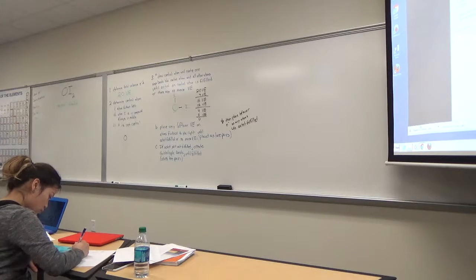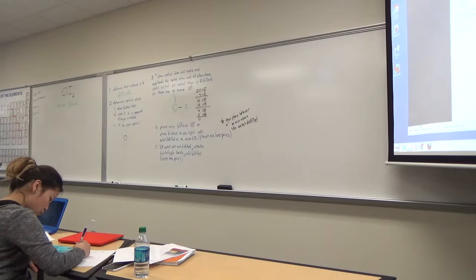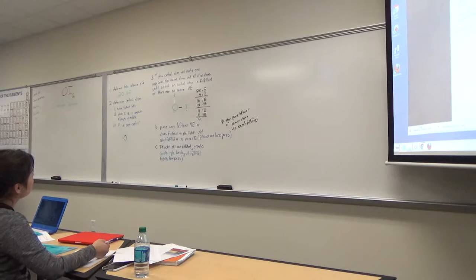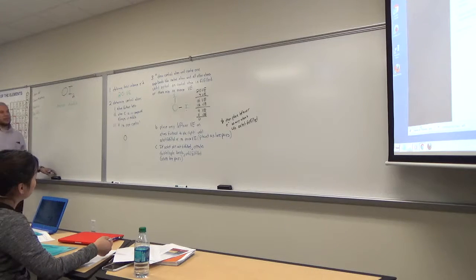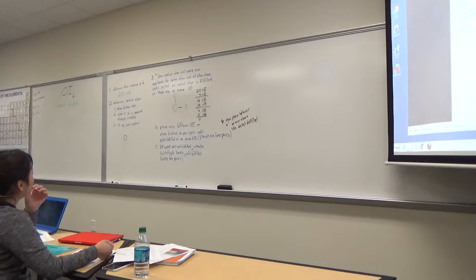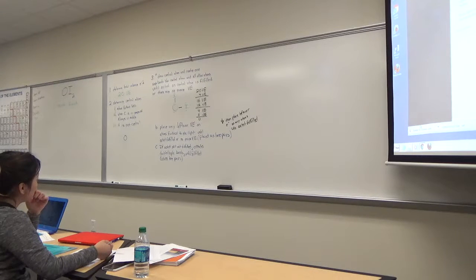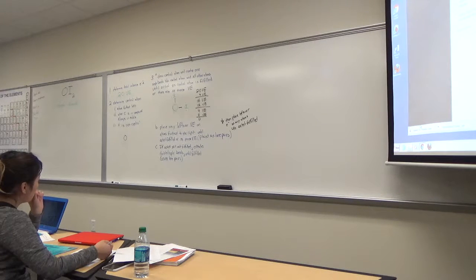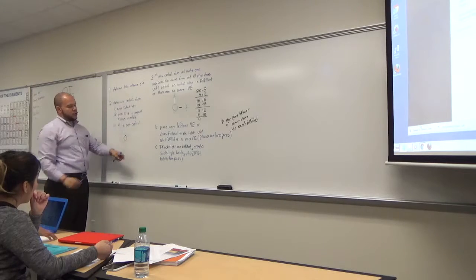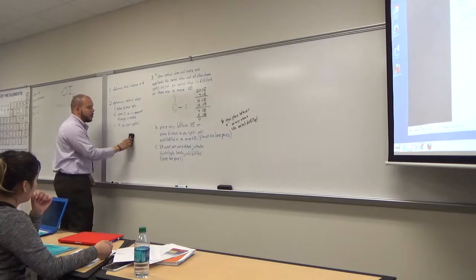Orientation doesn't matter for these Lewis structures as long as you draw them correctly. All of the examples so far only have single bonds. Now we need to open the next can of worms and introduce when we use Rule 3C, because we haven't had to use it yet.